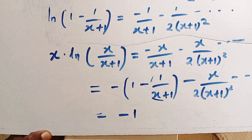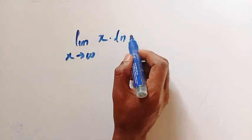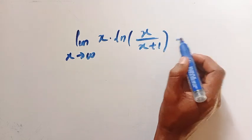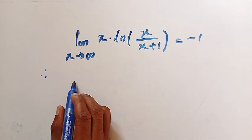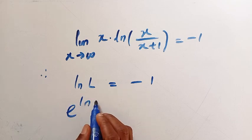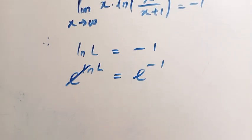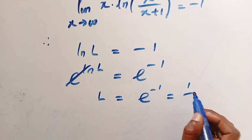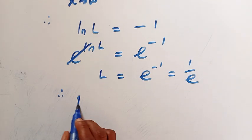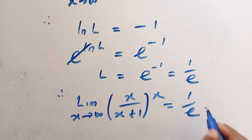Since this limit equals negative 1, we have ln L equals negative 1. Introducing the exponential to both sides: e to the power of ln L equals e to the power of negative 1. Since e and ln are inverses, they cancel, giving L equals e to the power of negative 1, which is 1 divided by e. Therefore, the limit as x approaches infinity of x divided by x plus 1, raised to power x, equals 1 divided by e. Thanks for watching and see you in the next video. Never stop learning.